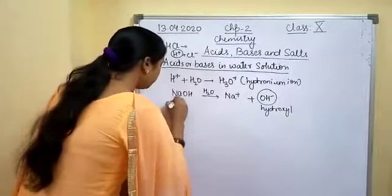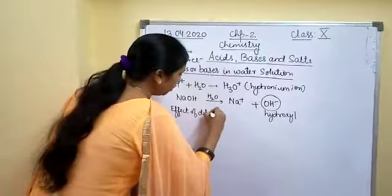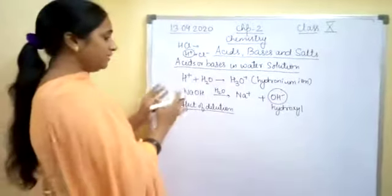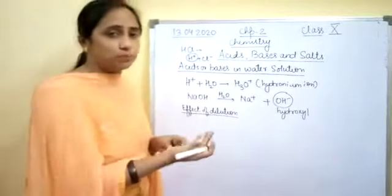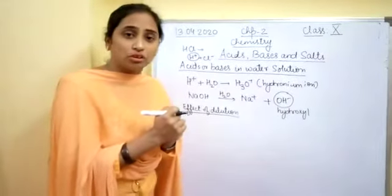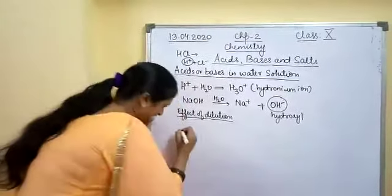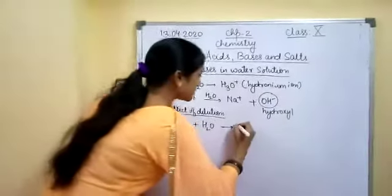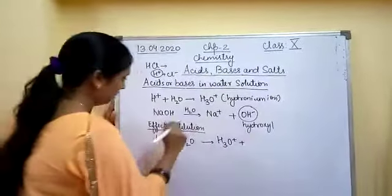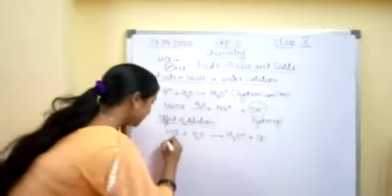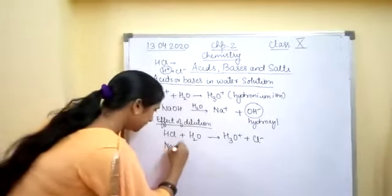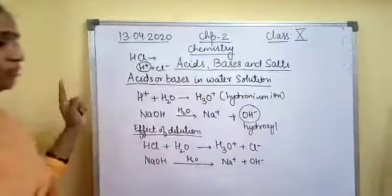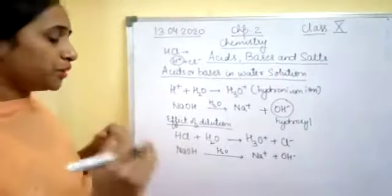Now we will learn about the effect of dilution on acids and bases. Dilution means there is a decrease in the concentration of either H⁺ ions, hydronium ions, or OH⁻ ions. If HCl is diluted with water, it gives H₃O⁺ and chloride ion. Similarly, if water is added to a base, it gives sodium ion plus hydroxyl ion. There is a decrease in the concentration of ions per unit volume.